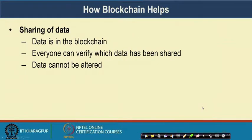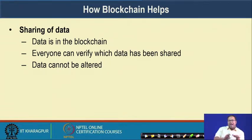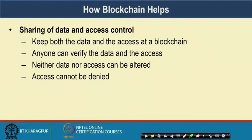The second form where blockchain can help is the sharing of data. Instead of putting access in the form of a transaction in the blockchain, you put the data in the blockchain itself. In that case, you can always see which particular data has been shared with others, and once shared, that data cannot be altered. This model is very useful for supply chain management, where the data about demand and supply at different locations can be put inside a blockchain. The third model is sharing of data as well as access control — combining both approaches, keeping both the data and the access on a blockchain. Anyone can verify the data as well as who has accessed it; neither the data nor the access can be altered, giving you a tamper-proof technology to maintain data and enforce access control.